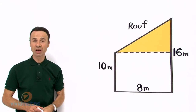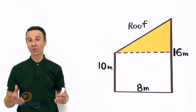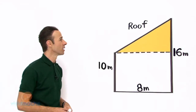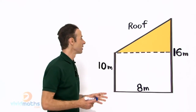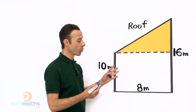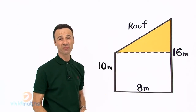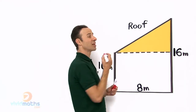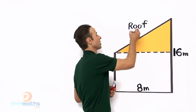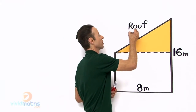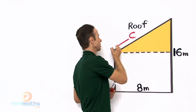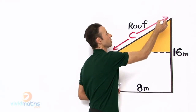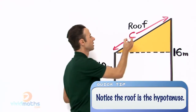Let us start off where we always start off, and that means we need to label. So let us label what we have based on the information we have. What we are looking for first of all is the roof, because that is what we don't know, so let us call that C. There is our roof — we are going to call that C — and that is the distance from there all the way up to there. That is the missing link.